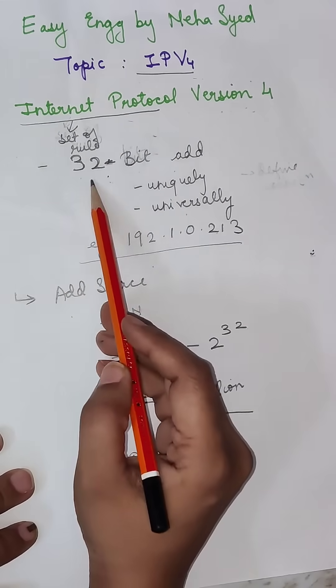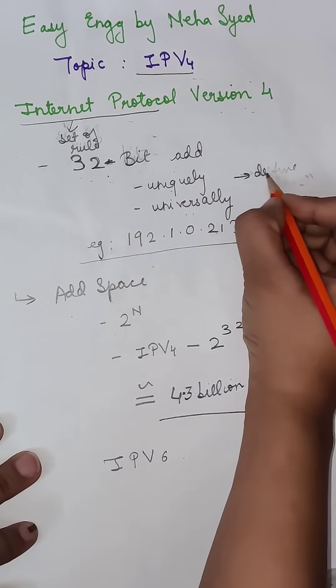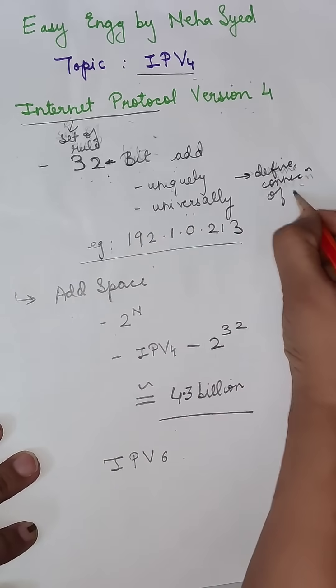Now what is IPv4? It is a 32-bit address space defined uniquely and universally to define connection of devices.